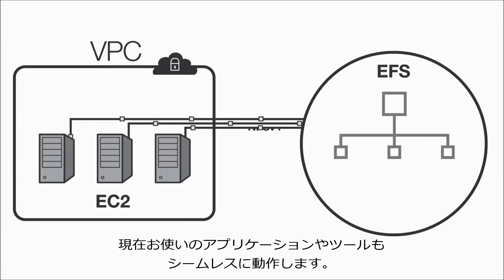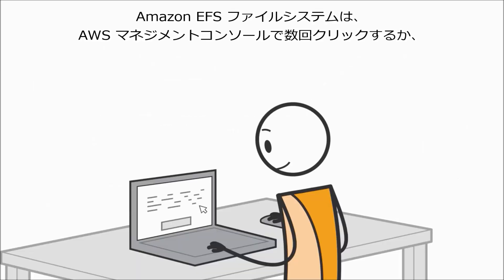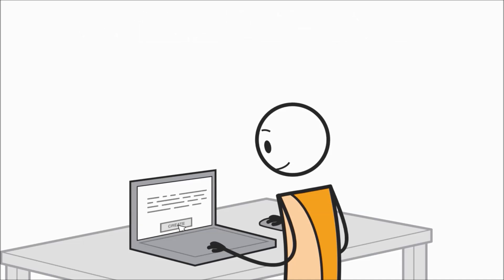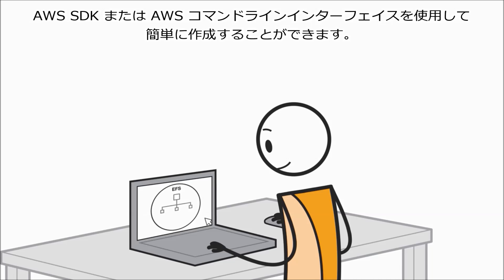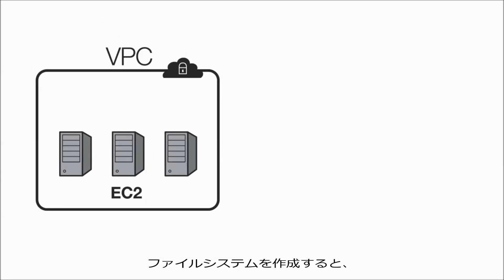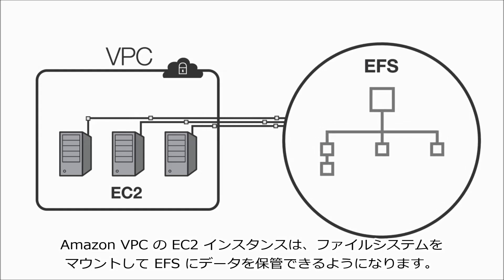So the applications and tools that you use today work seamlessly. It's easy to create an Amazon EFS file system with a few clicks in the AWS Management Console, or by using the AWS SDK, or AWS Command Line Interface. Once your file system is created, EC2 instances in your Amazon VPC can mount your file system and begin storing data in EFS.